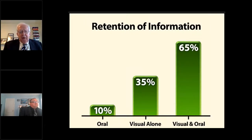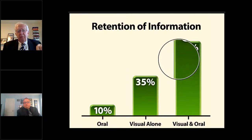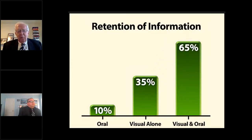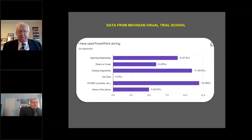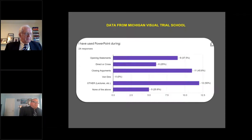One study showed that if a person only receives oral information, after a period of time they'll only retain about 10% of it. If they receive it visually, they'll retain about 35%. But if you combine both oral and visual, they'll retain up to 65%. We run a visual trial school in Michigan and poll attorneys on technology use. The overwhelming tendency for criminal prosecutors is to use it in closing argument, but also in opening statement, direct, and cross.